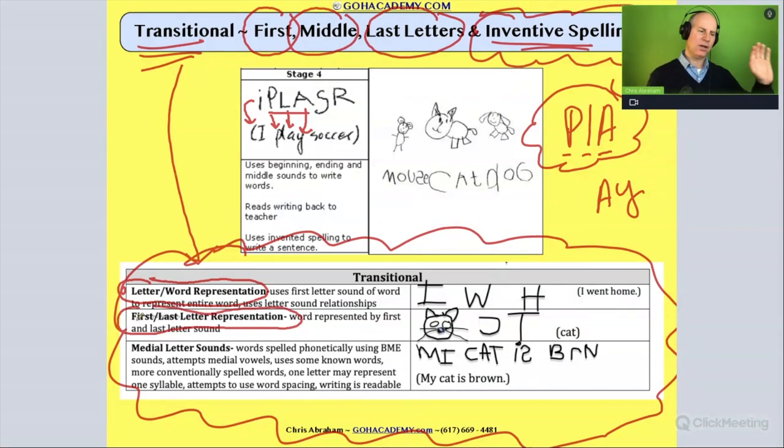Now it doesn't have to be correct. I'm sorry. The initial, this one is sorry. First sound, last sound of a word. They're just getting the initial sound, the end sound. So that would be like, yes, we have an example here.